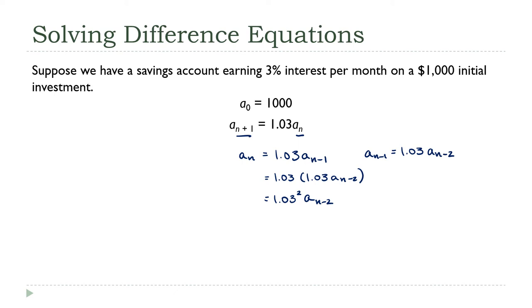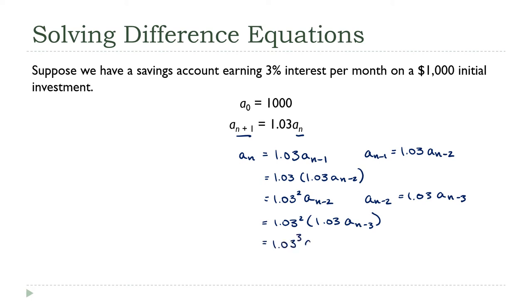That helped, but let's do it again. aₙ₋₂ = 1.03·aₙ₋₃. Substituting that in, this becomes 1.03² times 1.03·aₙ₋₃, which simplifies to 1.03³·aₙ₋₃.